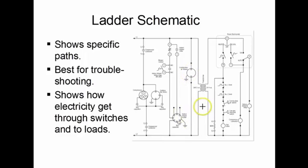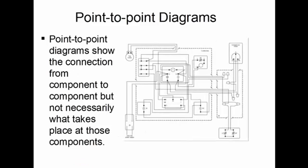Point-to-point diagrams show the interconnection between the components. It doesn't show you much other than where the wires go, how many wires there are, and where they're connected. You will see these, again, on the larger commercial equipment schematics. But you will not see this in a residential piece of equipment.